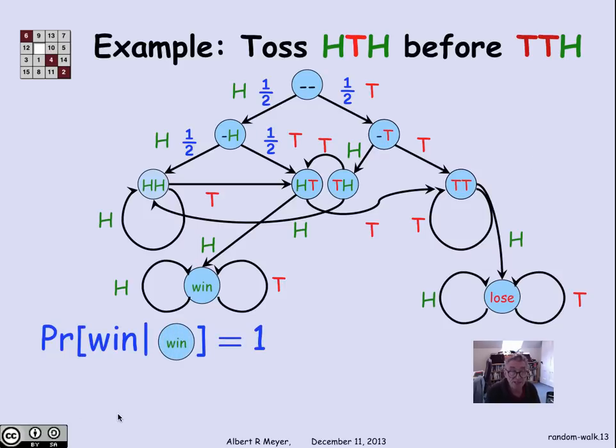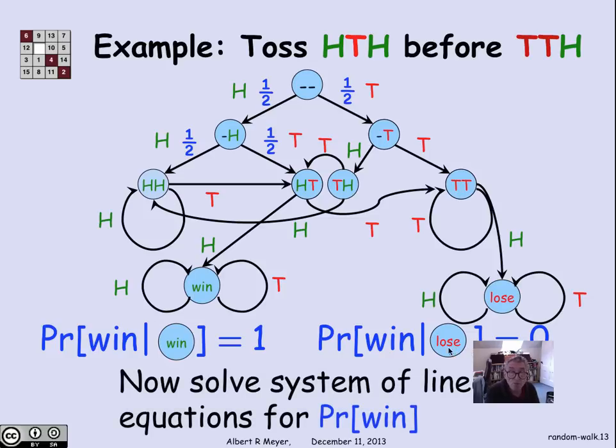And what we can say is the probability of winning, if you're in the win state, is 1. And the probability of winning, if you're in the lose state, is 0. And overall I simply have this system of linear equations for the probability of winning in one state given other states. And I can solve these linear equations to find the probability of winning in the start state, which is simply the probability of winning.